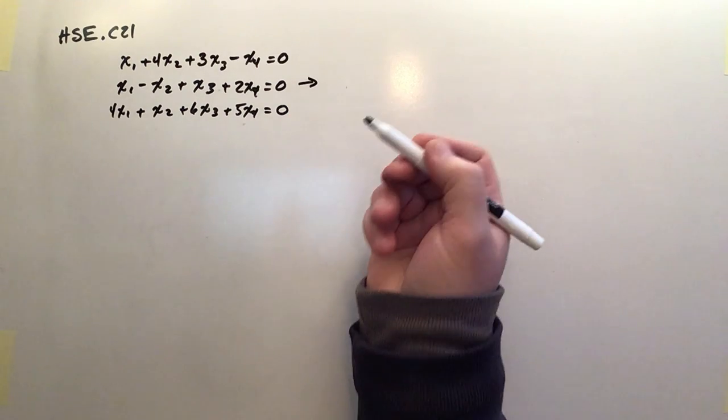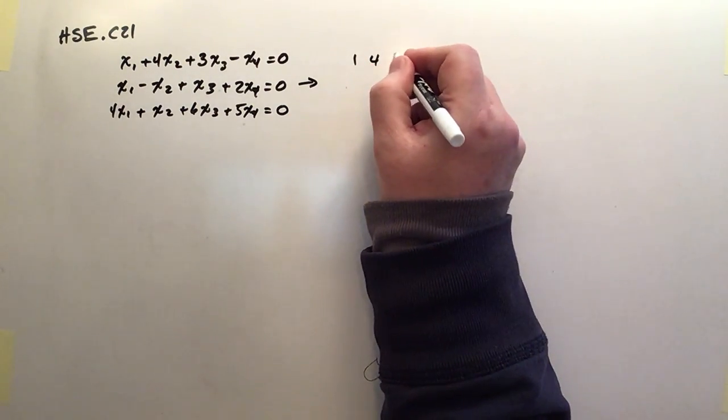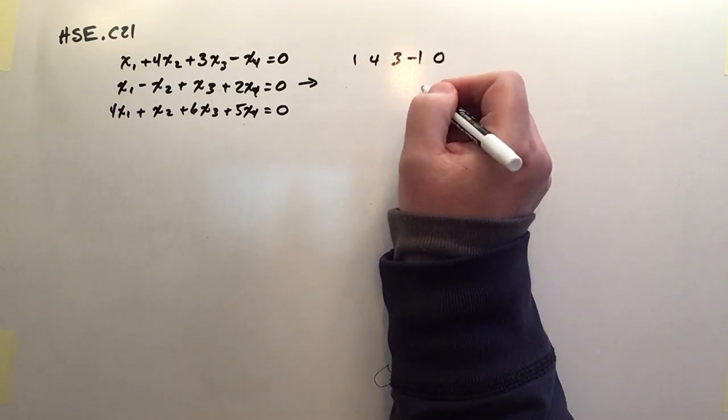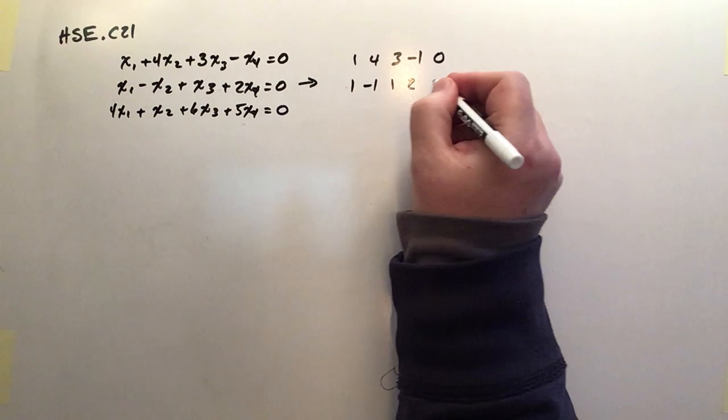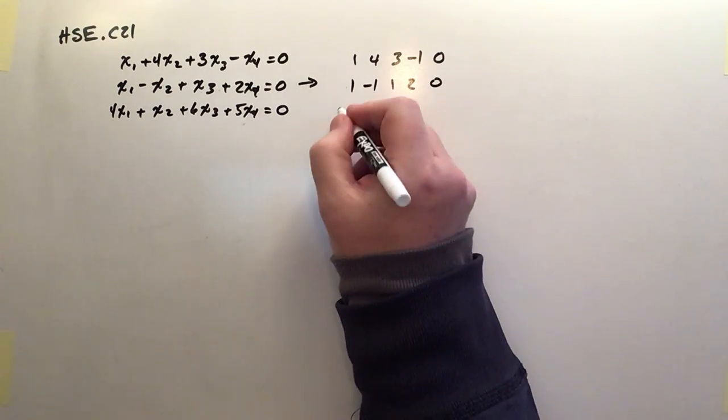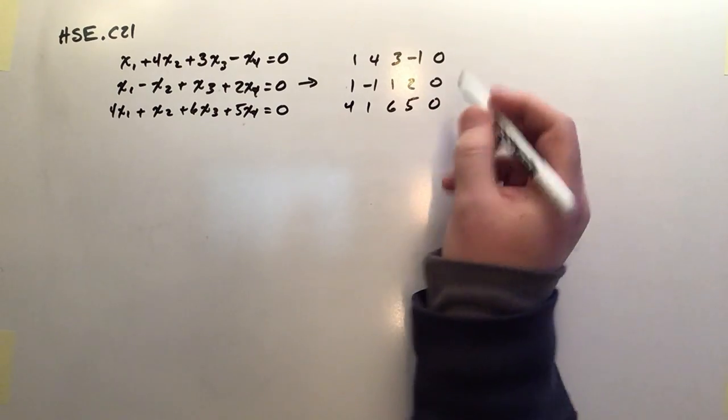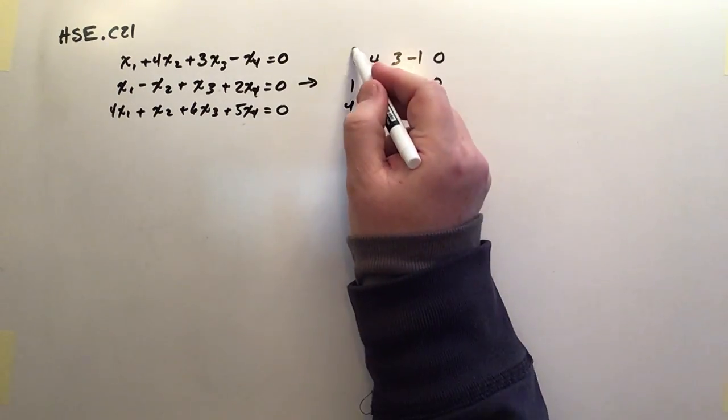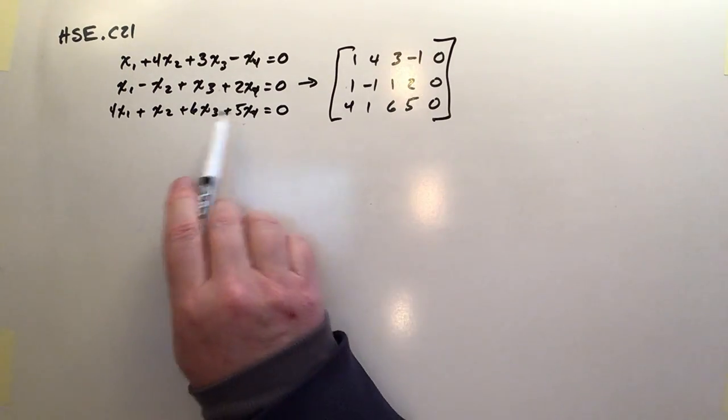So first step is to write the augmented matrix for this. So this one is 1, 4, 3, negative 1, 0. 1, negative 1, 1, 2, 0. 4, 1, 6, 5, 0. And you'll notice that the augmented matrix always final column is all zeros for a homogeneous system.